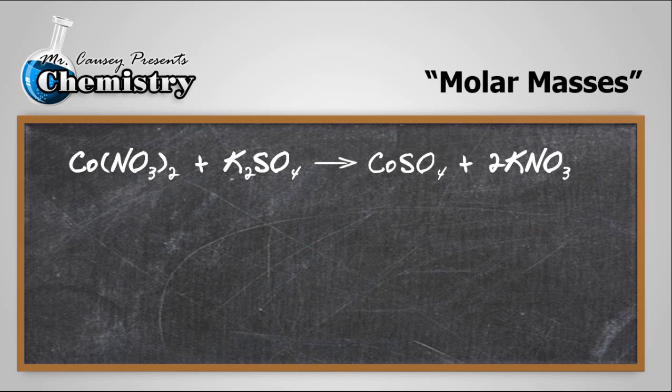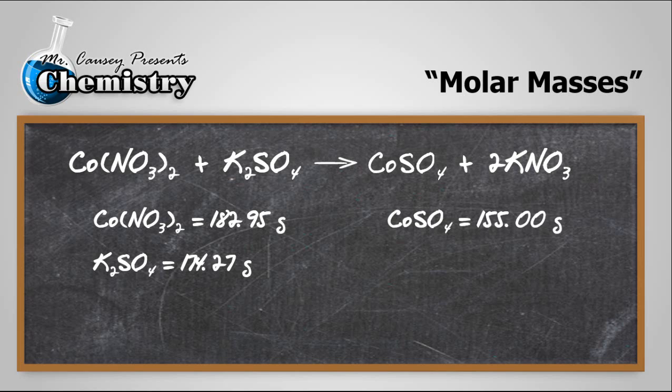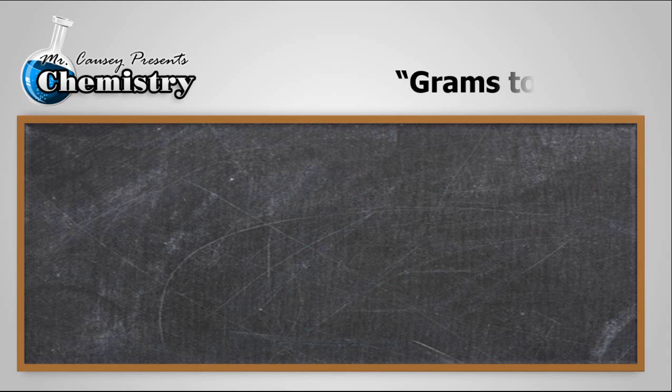So let's calculate the molar masses. Cobalt 2 nitrate equals 182.95 grams, and potassium sulfate is 174.27 grams. Cobalt sulfate is going to be 155.00 grams, and potassium nitrate is going to be 101.11 grams. Now, if you're not sure how to do any of this, I have a video out there that shows you how we calculate molar masses.